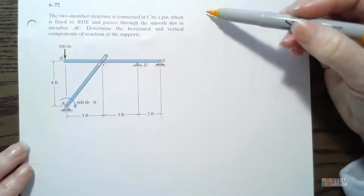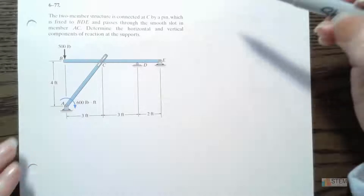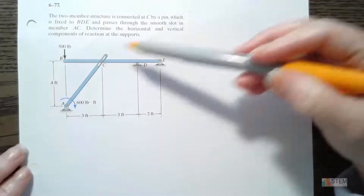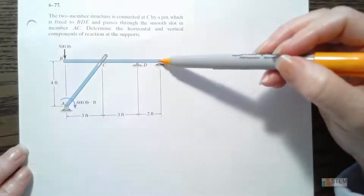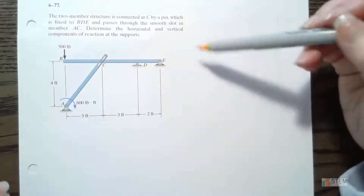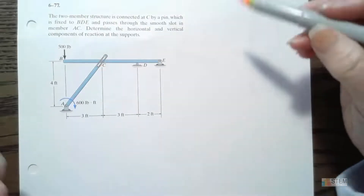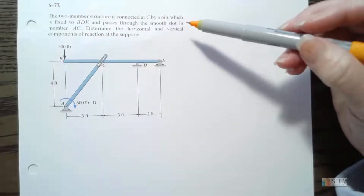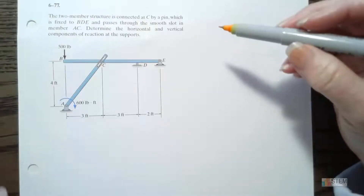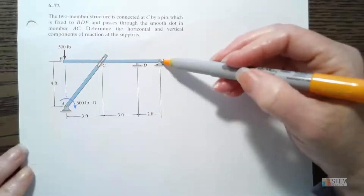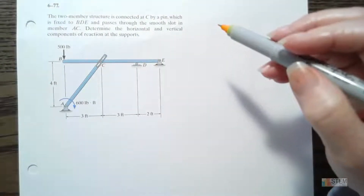The problem tells us we've got this two-member structure — here's one member and here's another. It's connected at C right here by a pin, and that pin is fixed to this horizontal member BDE. There's a smooth slot here, so no friction there. We want to find the horizontal and vertical components of reaction at the supports: E, A, and D — those are what are supporting the two members.